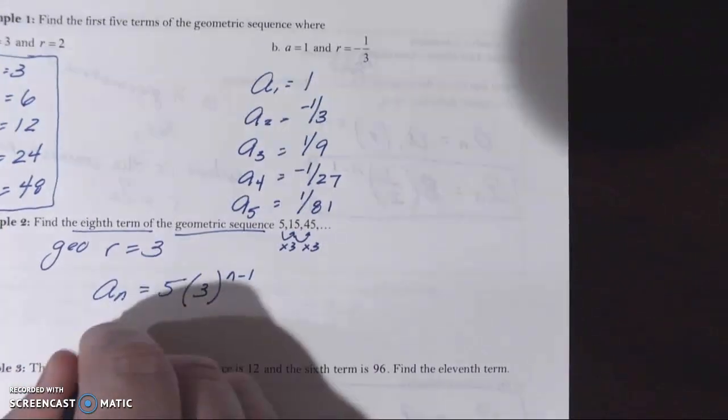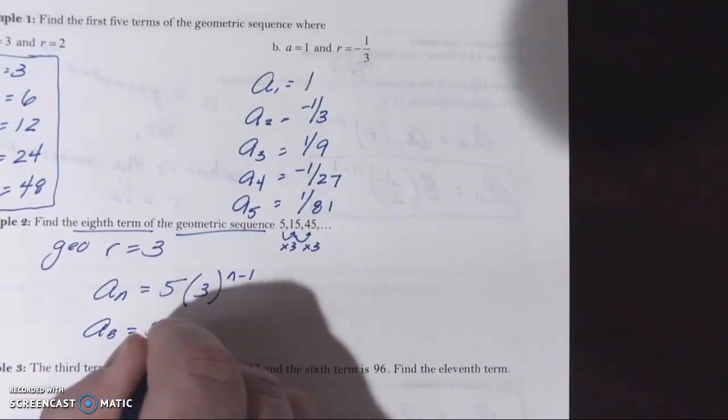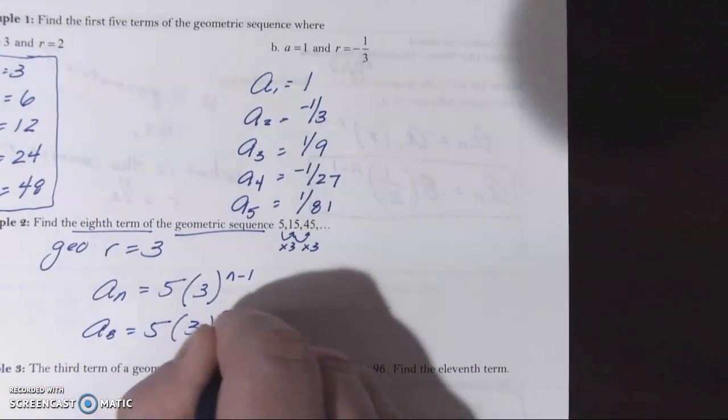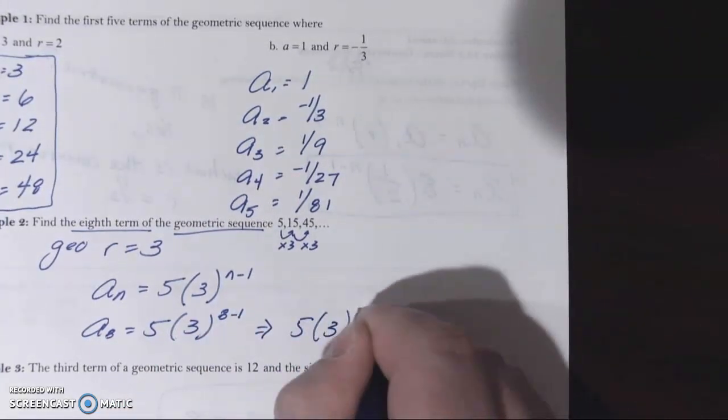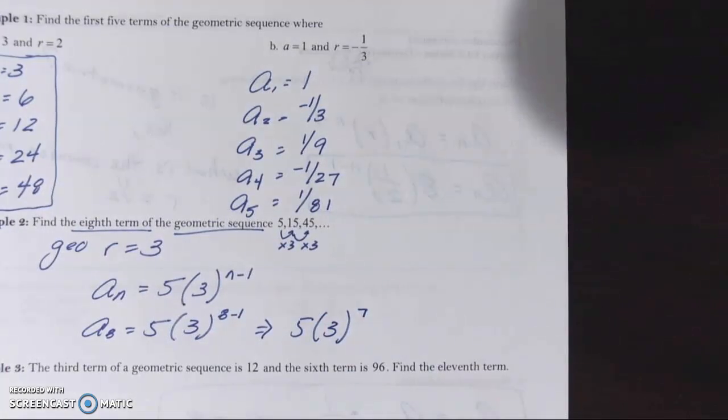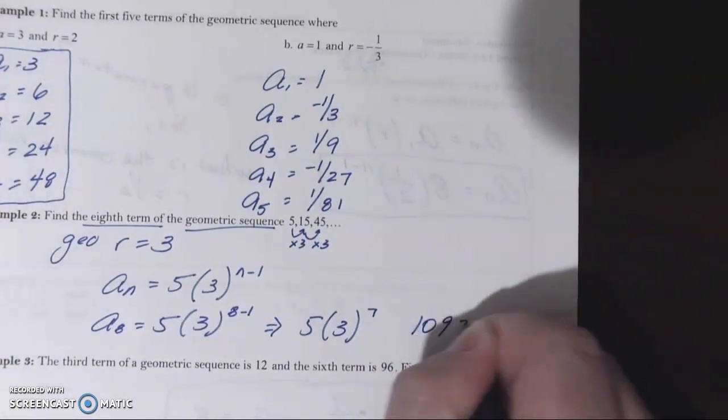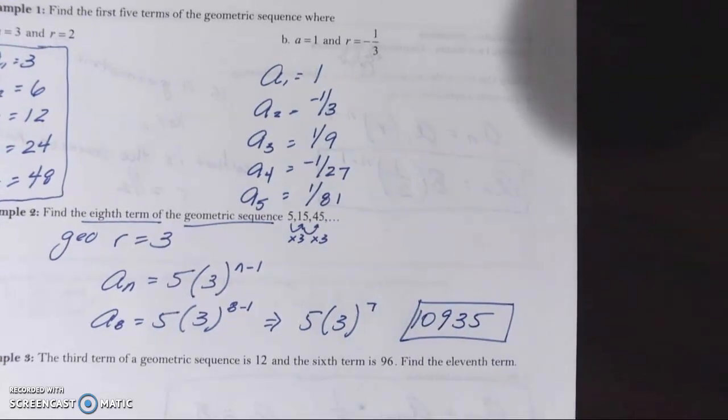If we're looking for the eighth term, well, then the eighth term is five times three to the eight minus one power, or five times three to the seventh power. I'm going to use my calculator here real quick. Five times three to the seventh power, 10,935 would be the eighth term. Let's move along to example three.